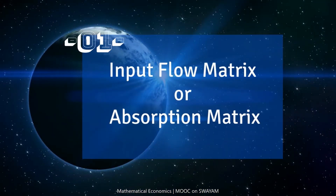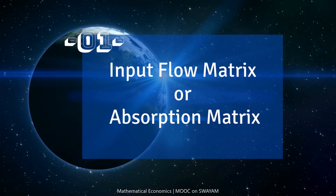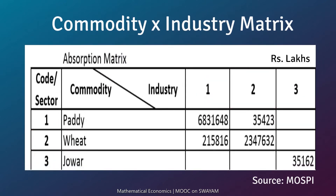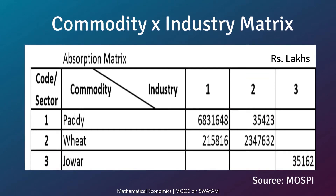The input flow or absorption matrix is also known as the commodity by industry matrix. The commodities are entered as rows marked as 1, 2, 3 and the industries are entered in the columns. The rows represent groups of commodities which are the principal products of the corresponding industries. The industry columns give the commodity inputs of raw materials and services which are used to produce outputs of particular industries. In this sample table,